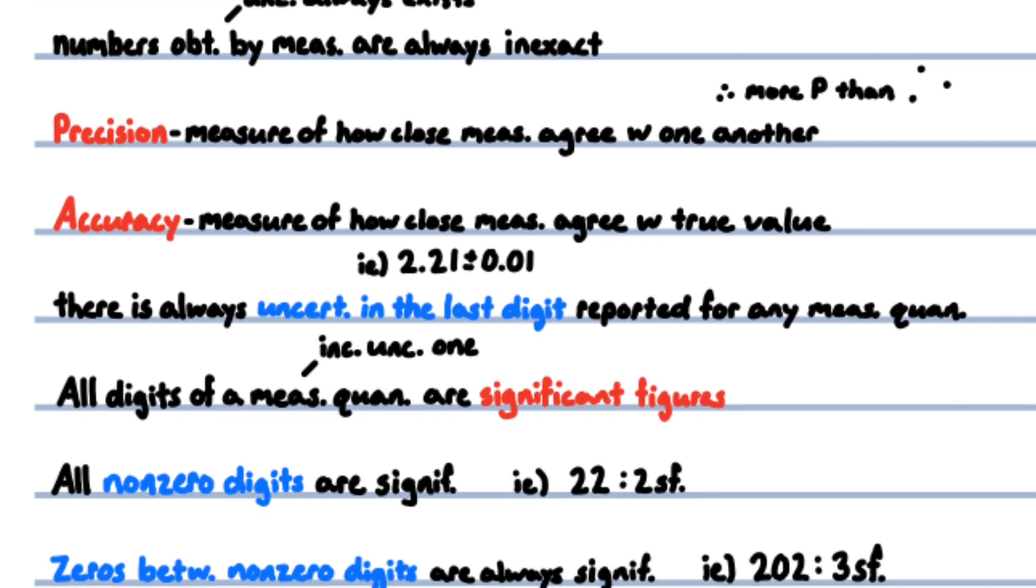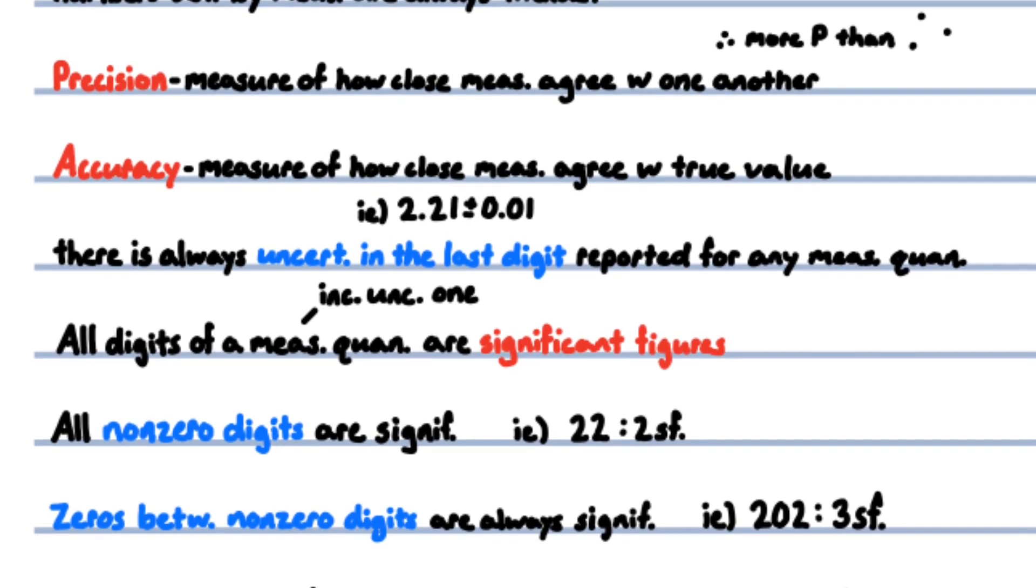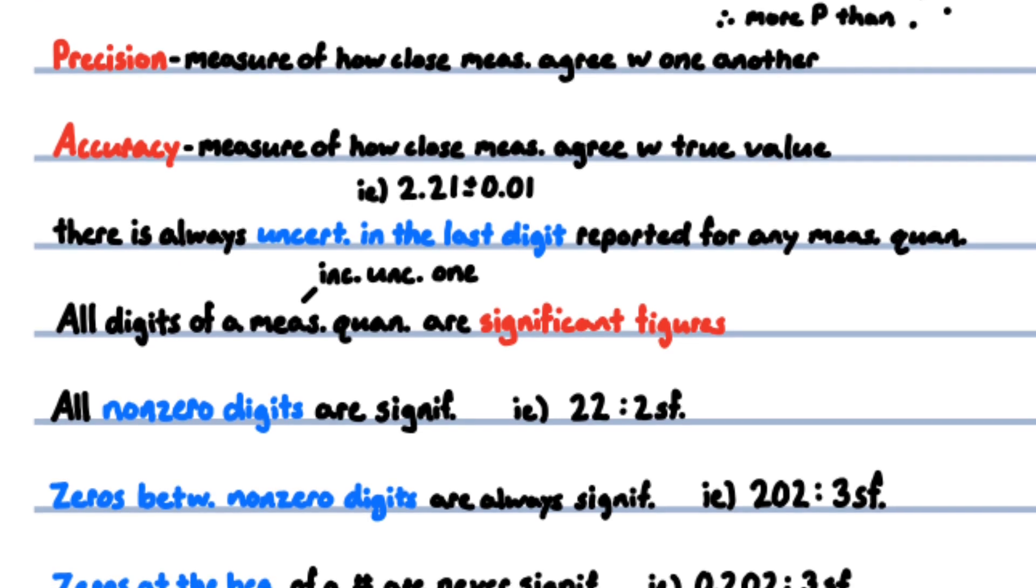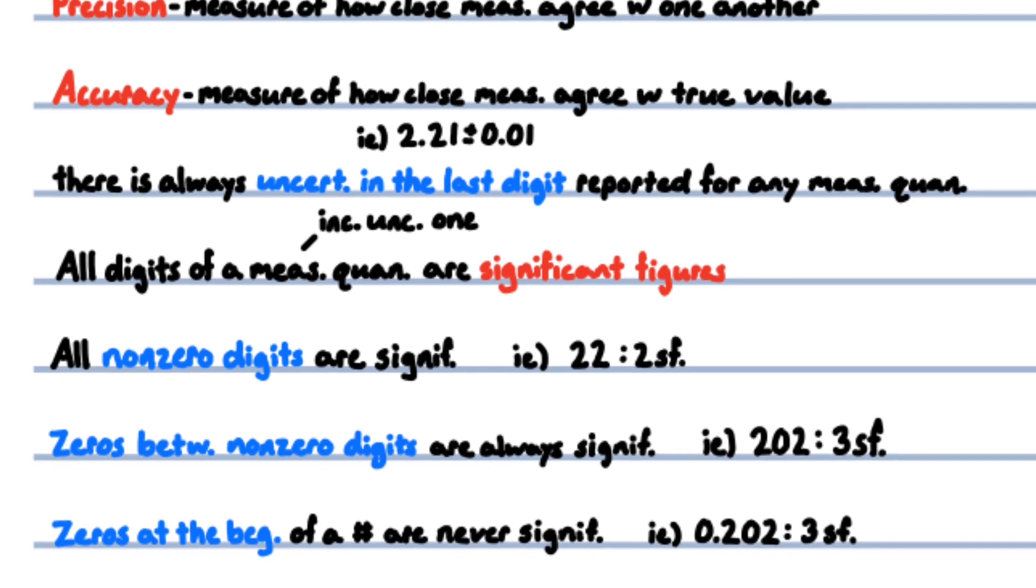Precision is the measure of how closely individual measurements agree with each other. More spread out is less precise. Accuracy is the measure of how close a measurement agrees with the true value, for example, hitting a bullseye on a dartboard is accurate. Hitting it multiple times is precise and accurate. There is always uncertainty in the last digit reported for any measured quantity.